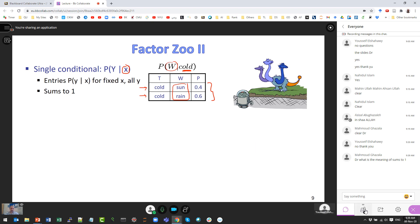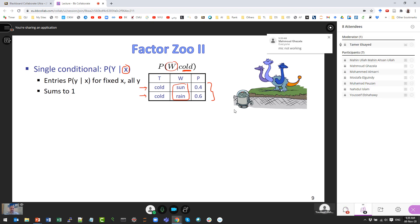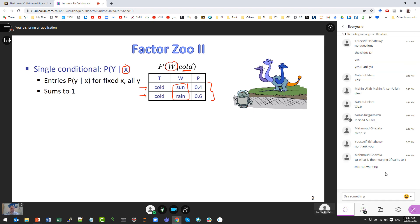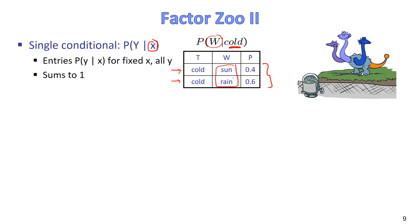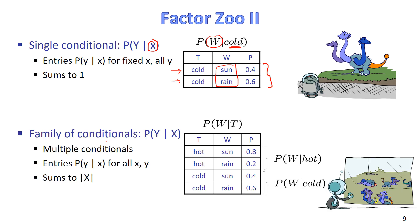The third type is a single conditional: P(Y | x_fixed). The condition is fixed, the query variable changes. For example, P(W | T=cold): all entries have T=cold and W takes all possible values. This is a conditional distribution table, and the entries sum to one.